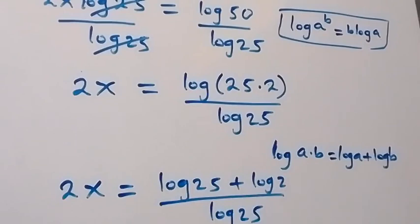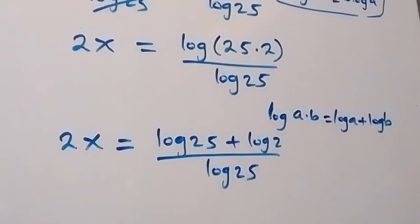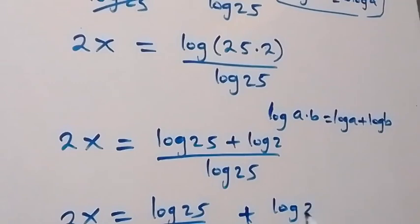We can separate this into 2 fractions. This gives us 2x equals log 25 over log 25, plus log 2 over log 25.